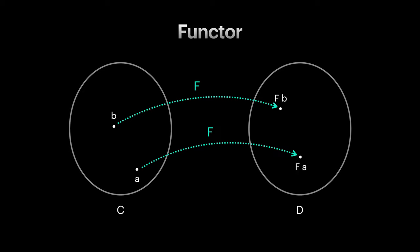But objects by themselves don't have any structure. It's the arrows and composition of the arrows that gives us power to model structures. So we also need to be able to map arrows. If there is an arrow between two objects, there should be an arrow between the mapped objects as well.